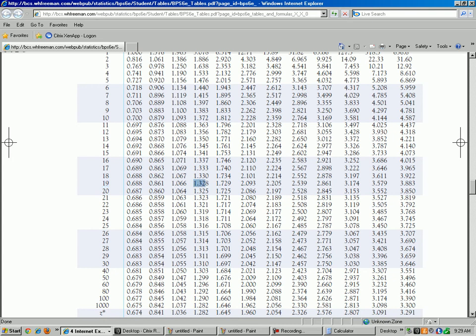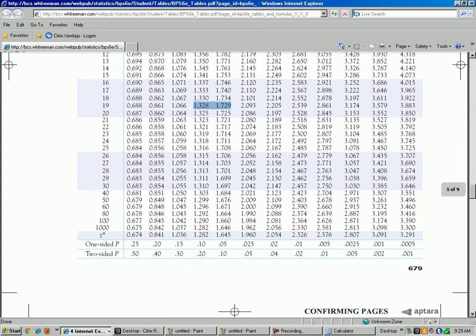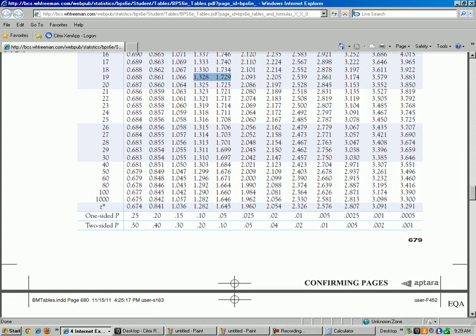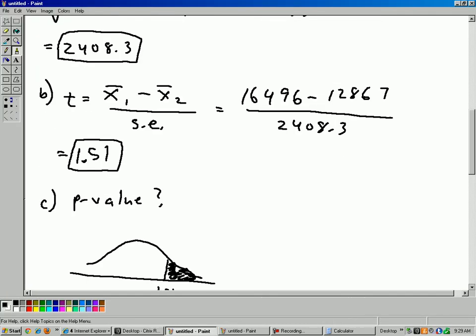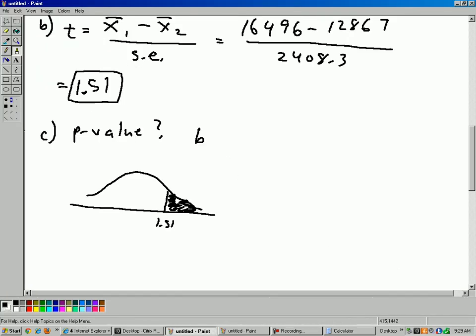Well, here's 1.328. Here's 1.729. So my t of 1.51 is in between those two numbers. So then I just go down to the bottom to find what is the p-values for those two numbers there. So here's our two t's where 1.51 is in between. And so the p-values for one-sided is right here. So that tells us that the p-value is between 0.05 and 0.10. From the table, that's as good as I can get. It's between 0.05 and 0.10.